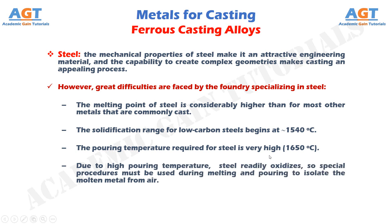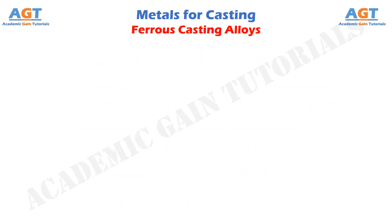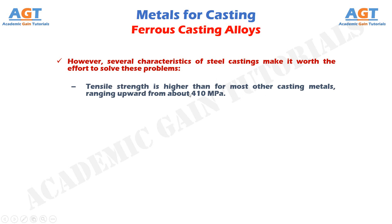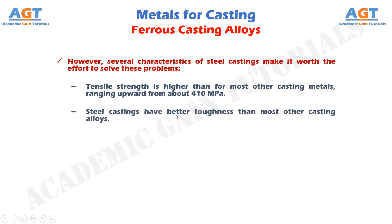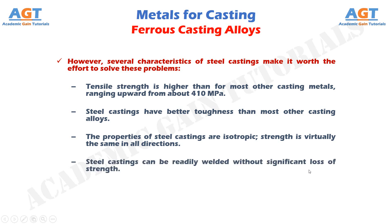Due to the high pouring temperature, steel readily oxidizes, so special procedures must be used during melting and pouring to isolate the molten metal from air. Molten steel has relatively poor fluidity, which limits the design of thin sections in steel cast components. However, several characteristics make steel castings worth the effort: tensile strength is higher than most other casting metals, ranging upward from about 410 MPa. Steel castings have better toughness than most other casting alloys, their properties are isotropic — strength is virtually the same in all directions — and they can be readily welded without significant loss of strength.